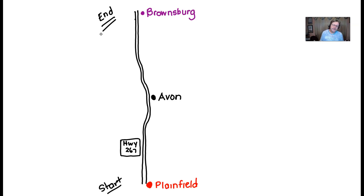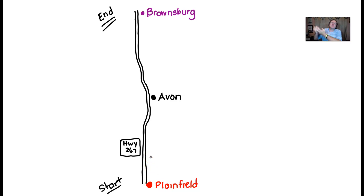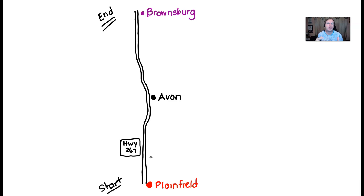Why do we have to be continuous? Let's say you're driving from Plainfield and aliens abduct you — your car gets beamed up to their spaceship, the spaceship flies over Avon, and then drops the car back in Brownsburg. That's not going to happen. That kind of violates the continuity requirement. By continuous we mean the wheels of your car are always on the road, Highway 267. If you're confused by the IVT, think about a situation like this.